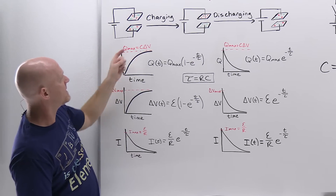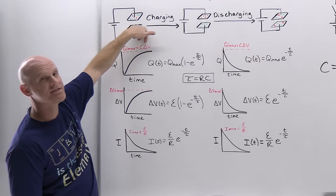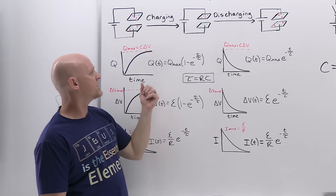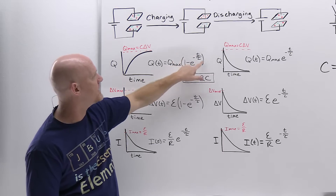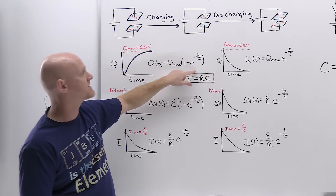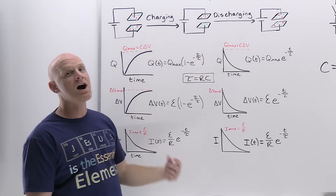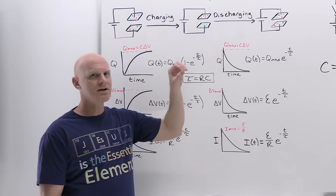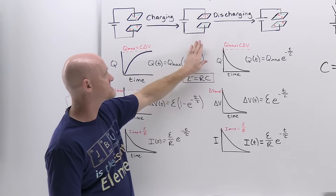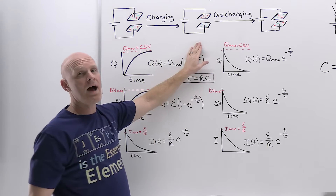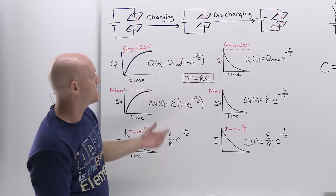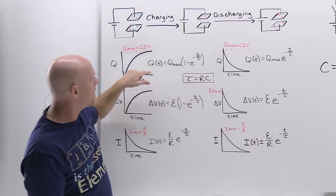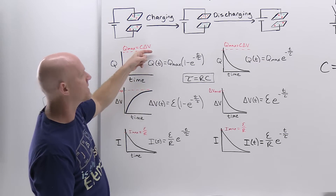The max value we asymptotically approach is simply Q_max = CΔV. The equation giving charge over time is Q(t) = Q_max × (1 − e^(−t/τ)). As time goes to infinity, e^(−∞) = 0, giving one minus zero — that term goes away and you end up with Q = Q_max at time equals infinity. The limit of this exponential term approaches zero as t approaches infinity, so Q asymptotically approaches Q_max at greater and greater amounts of time.